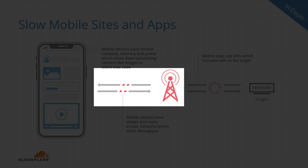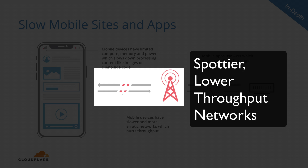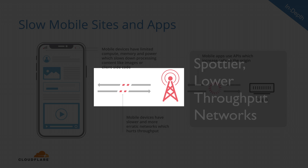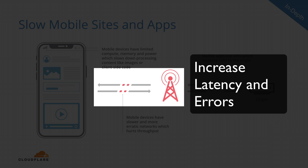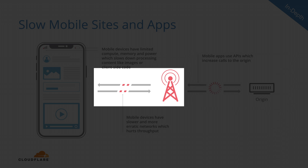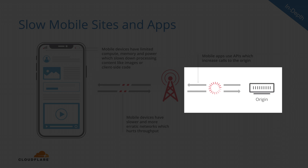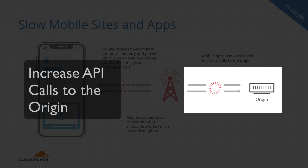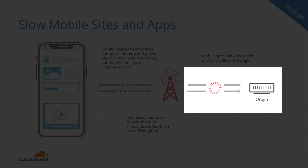Mobile devices often connect to spottier and lower throughput networks, which increase latency and errors. Mobile apps also typically increase the number of API calls needed, which reduces the effectiveness of caching and requires requests to travel longer distances to the origin.